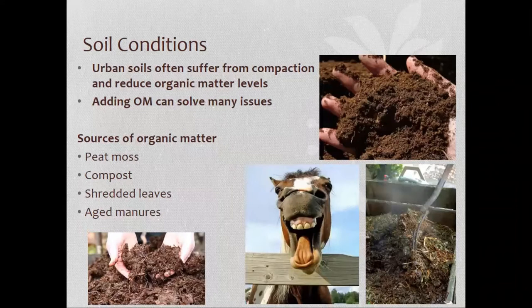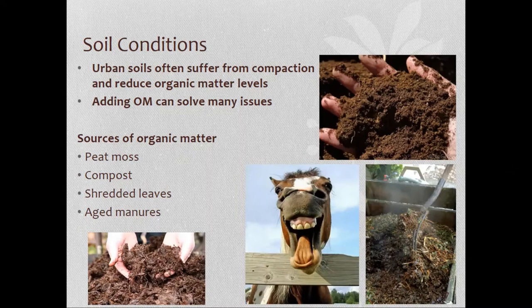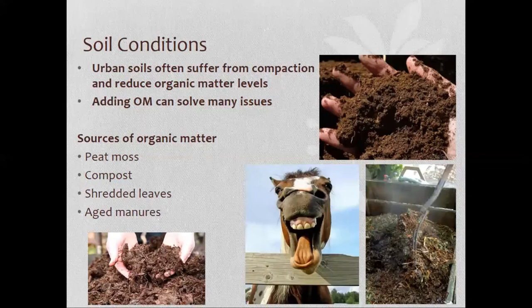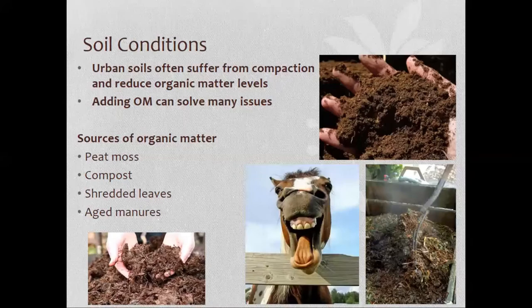Urban soils suffer from compaction, which reduces pore space and reduces air and water exchange capacity. Roots need both air and water. One solution is to incorporate organic matter — my favorite local source is the Urbana Landscape Recycling Center's prepared compost product. It has the consistency of coffee grounds, dark black organic matter. Getting that incorporated into the upper 12 inches of soil — with a tiller or by hand — is a great way to remediate the soil and help your tree be healthy.